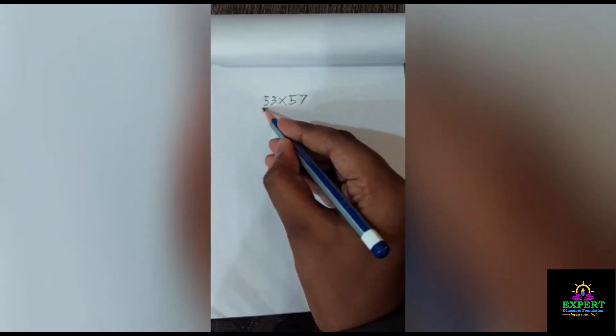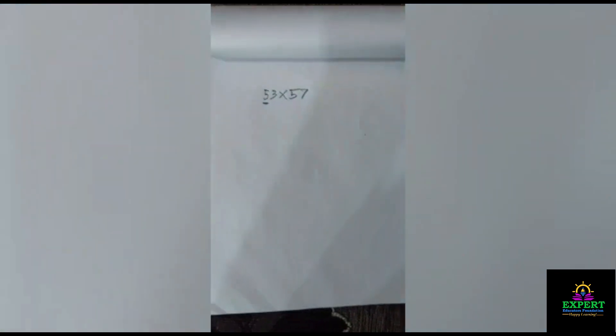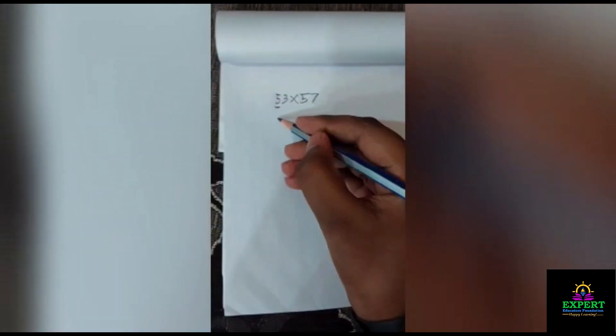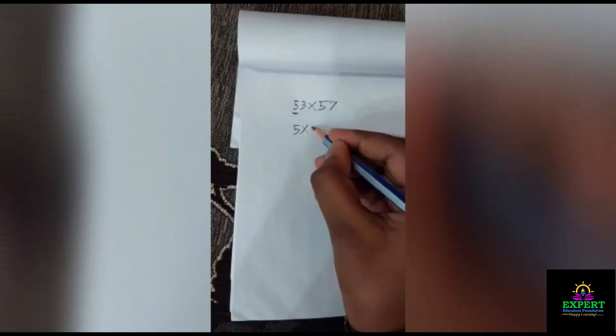First we have to multiply this 5 with its next number which is 6. So, 5 multiplied by 6 equals 30.